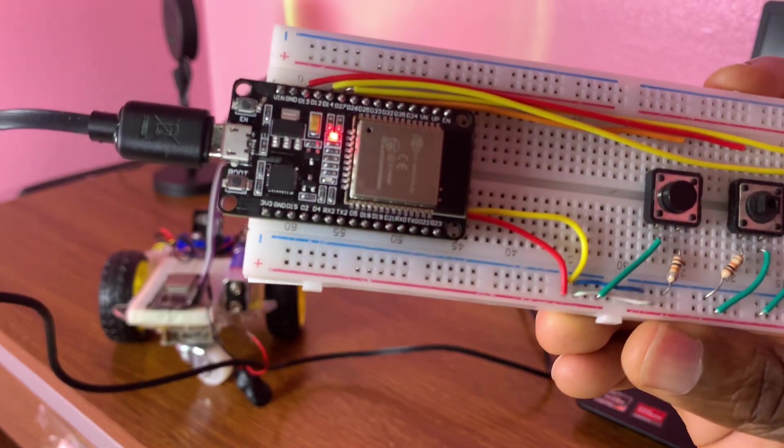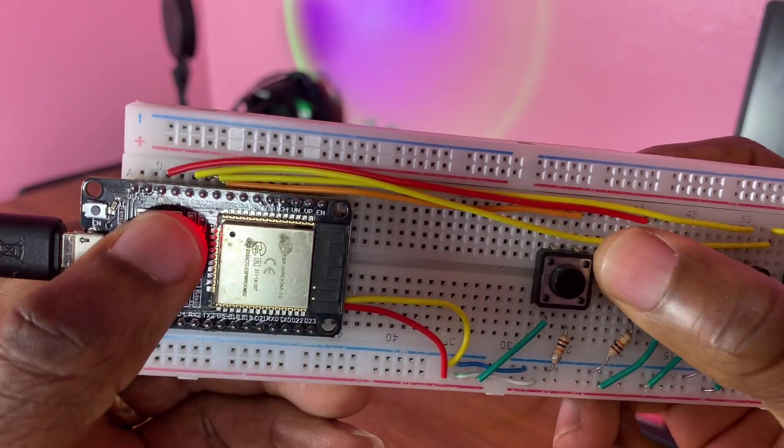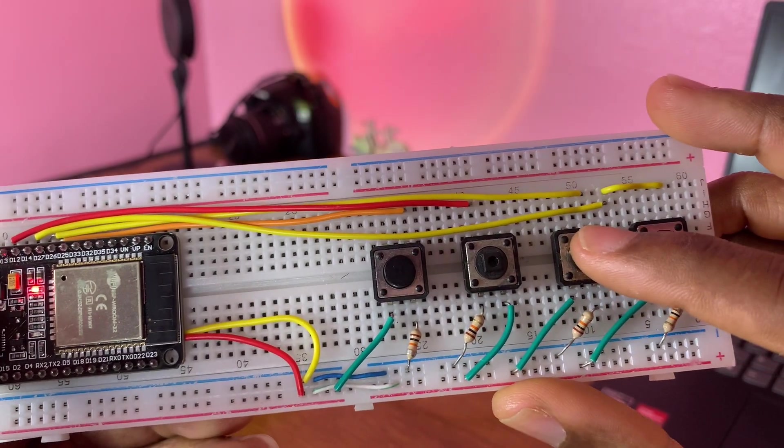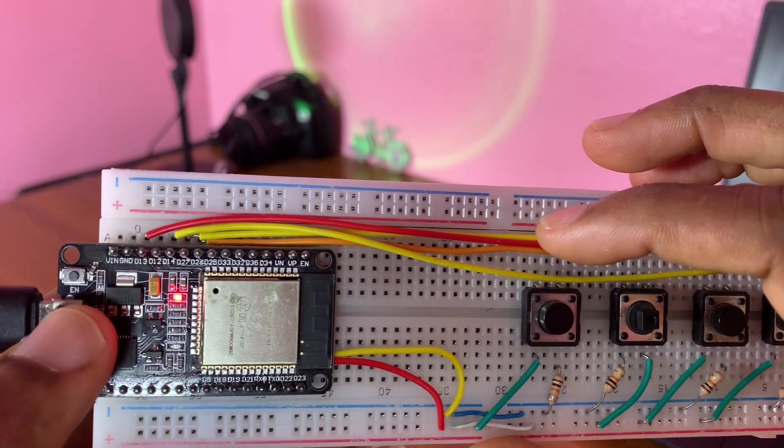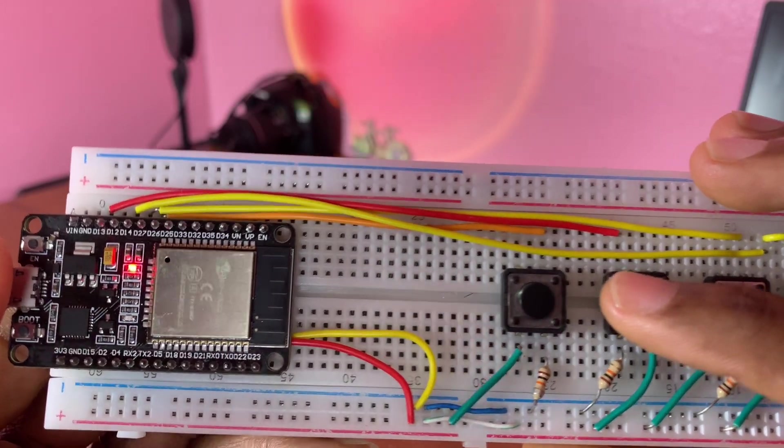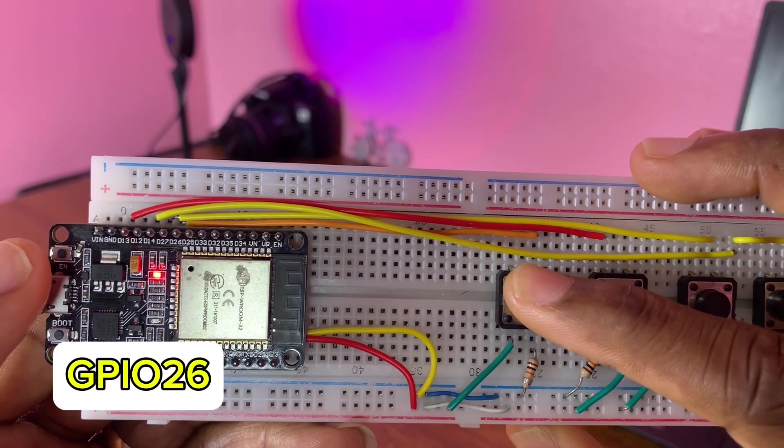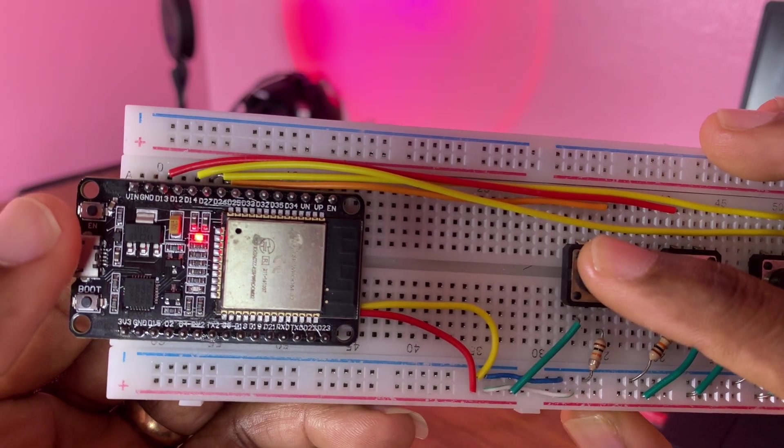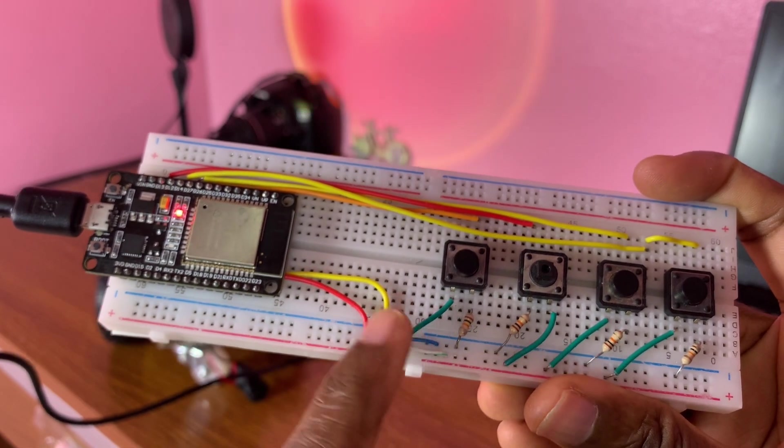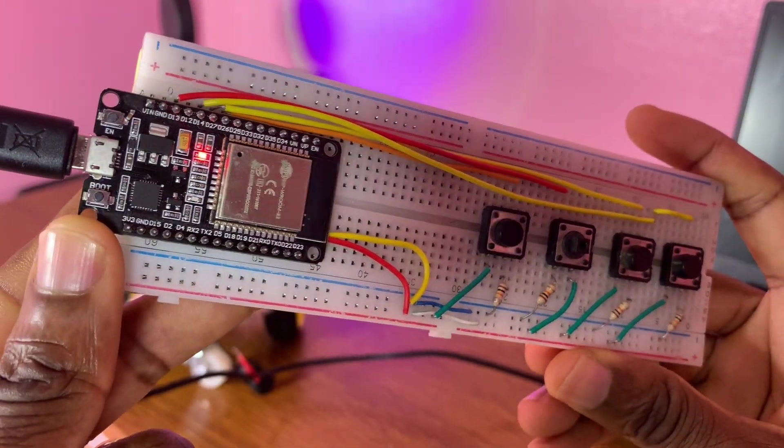This push button is attached to GPIO 14, and the second push button to GPIO 27, I mean the one to GPIO 26. The yellow wire is attached to ground. That's the transmitter.